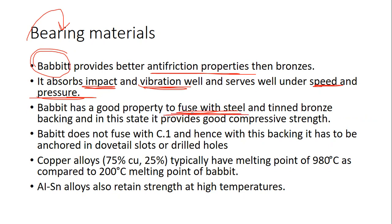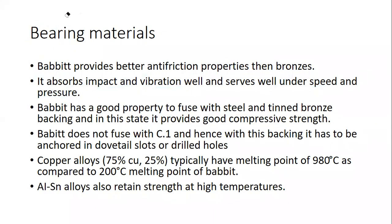Babbitts can fuse nicely with steel. Tinned bronze, in which the amount of tin is more, provides good compressive strength. Babbitts have good compressive strength, anti-friction properties, can sustain impact and vibration, and are good under high speed and pressure. However, Babbitts do not fuse with cast iron, so they must be anchored into dovetail slots or drilled holes. Copper alloys with 75% copper and 25% tin or lead typically have a melting point of 980°C, compared to 200°C for Babbitts.